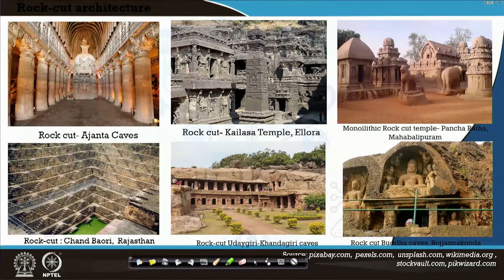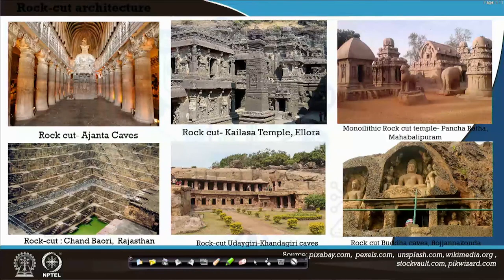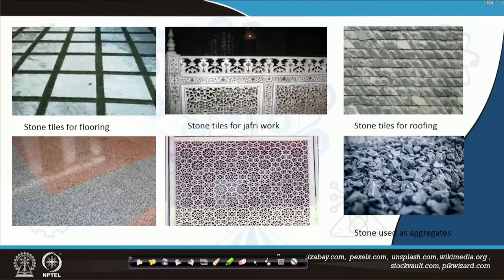These are some examples demonstrating the use of stone as a building material. The entire rock-cut architecture of Ajanta and Ellora caves is made of stone. The stepwell in Rajasthan is also cut out of stone. In our country, particularly Kota in Rajasthan, there are many quarries. You can see the monolithic rock-cut temple of Mahabalipuram — it has come out from a single rock. Stones for tiles: the flooring here is made of stone tiles that take human load.